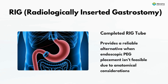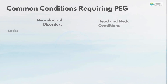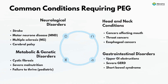Common conditions requiring PEG include neurological disorders such as stroke, motor neuron disease, multiple sclerosis, and cerebral palsy; head and neck conditions including cancers affecting the mouth, throat, and esophagus; gastrointestinal disorders such as upper GI obstructions, severe GERD, and short bowel syndrome; and metabolic and genetic disorders including cystic fibrosis, severe malnutrition, and failure to thrive.